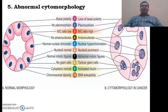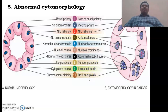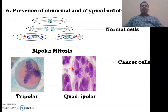Another characteristic is abnormal cytomorphological changes. We will observe abnormal cytomorphology in the form of loss of basal polarity, pleomorphism, increased nucleocytoplasmic ratio, anisonucleosis, nuclear hyperchomatism, prominent nucleoli, abnormal mitotic figures, giant cells, increased telomerase activity, and DNA aneuploidy. These are the different cytomorphological changes observed in tumor cells compared to normal cells.